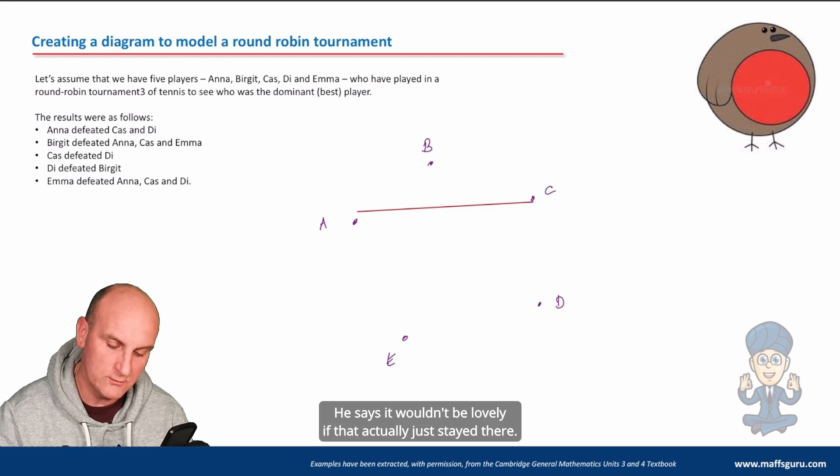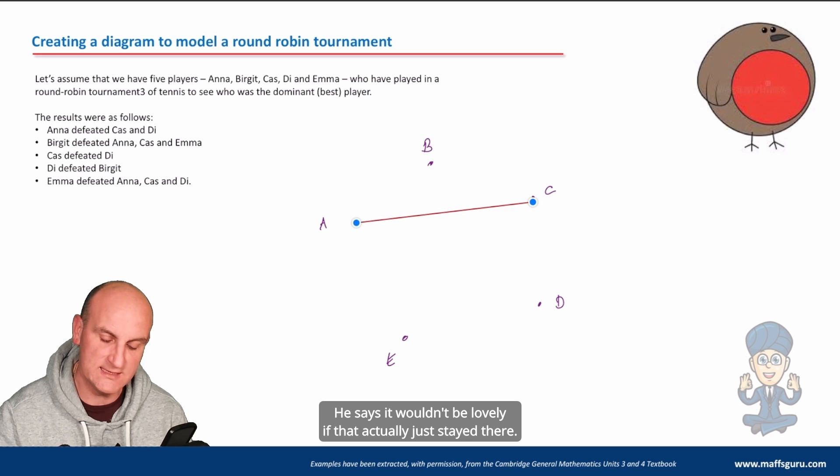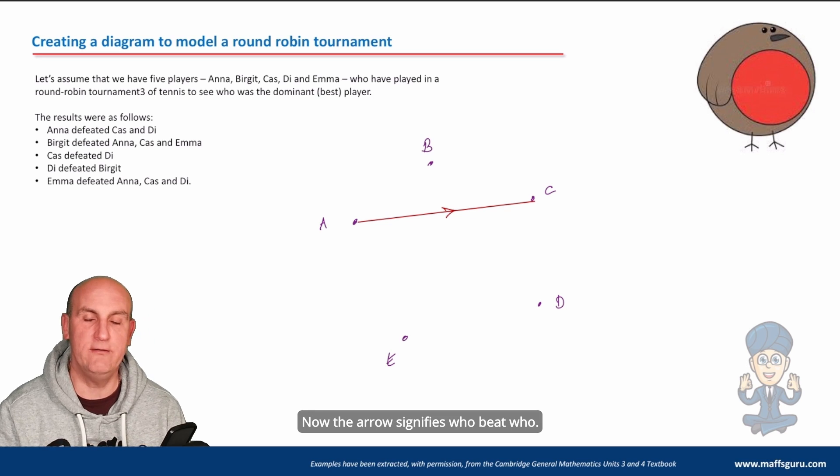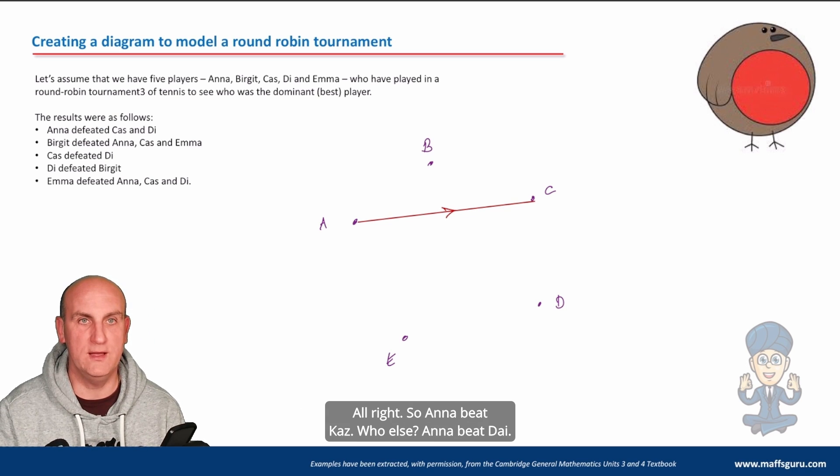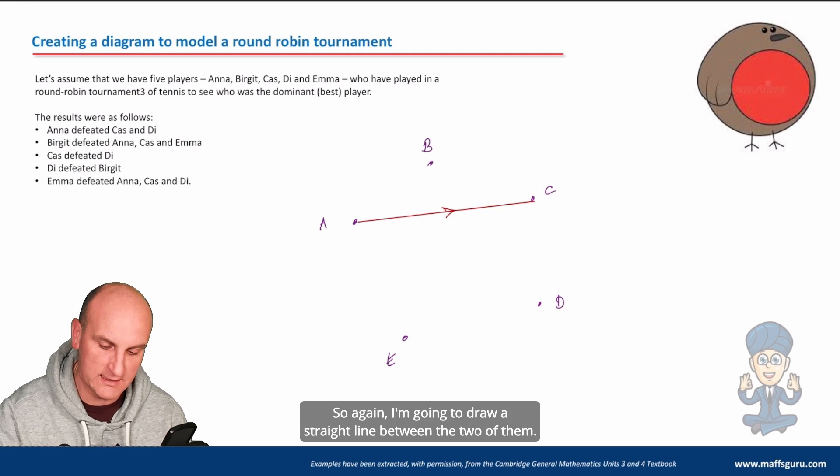Now what I'm going to do is draw a line between each of the people who played and an arrow to signify which one won. So if we start with Anna, Anna defeated Kaz, so I'm going to draw a straight line from Anna to Kaz. Wouldn't it be lovely if that actually just stayed there? There's Anna to Kaz, and I'm going to draw an arrow this way. Now the arrow signifies who beat who - so Anna beat Kaz.